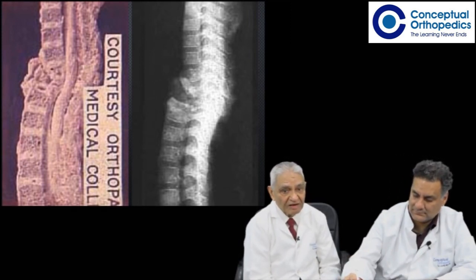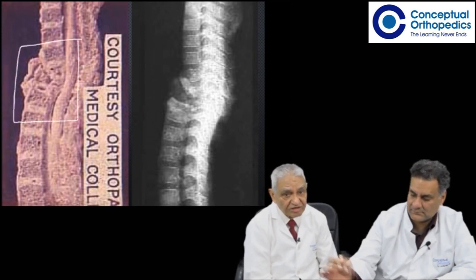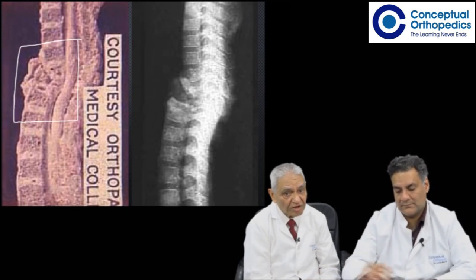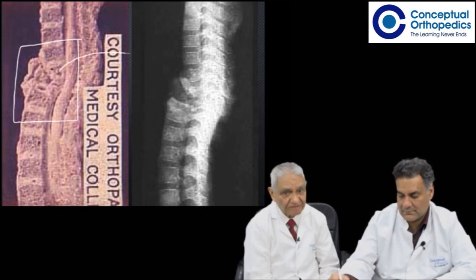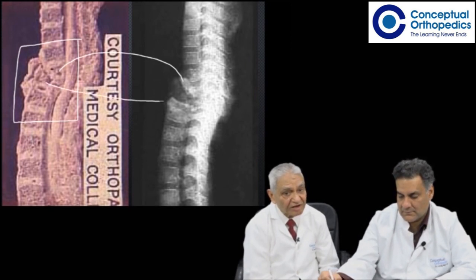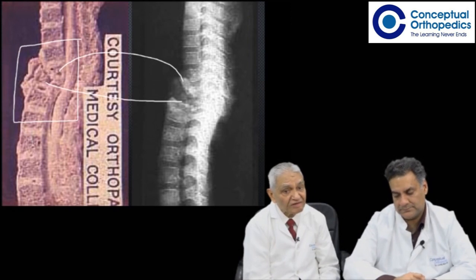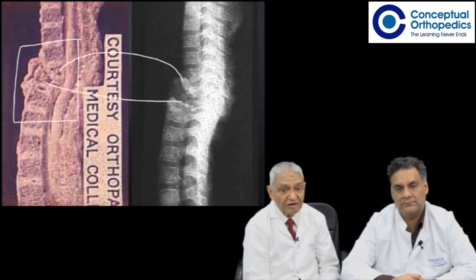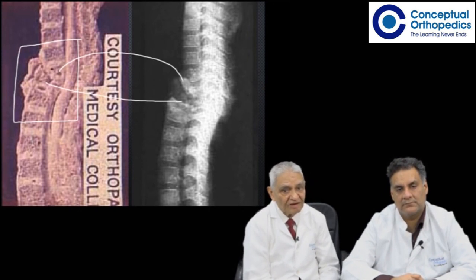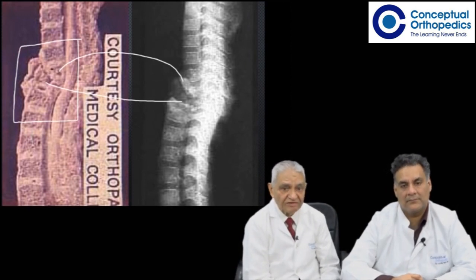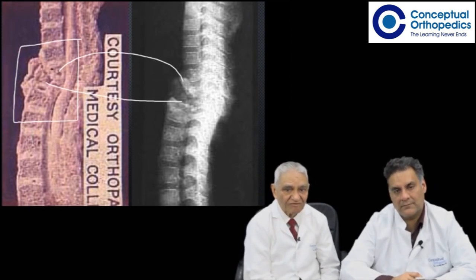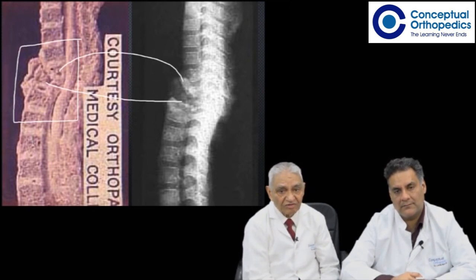One can see the angular deformity and gross destruction of the vertebral body — probably more than two vertebral bodies. You don't see much of the intervening disc; it has practically undergone degeneration or is absent. Looking at the X-ray of the same specimen — this is not an X-ray of a patient but of the specimen itself — one can see the destruction of the vertebral bodies.